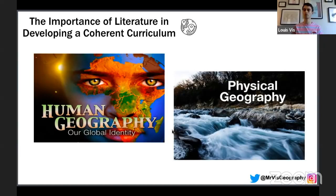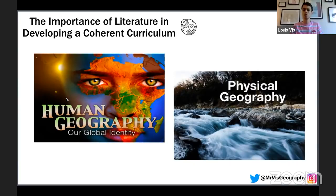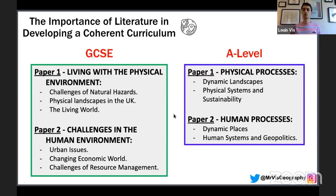The first thing we have to accept is that across the world geography is often seen as a binary subject, with human and physical concepts usually very distinct. In France, physical geography is taught in SVT — their biology equivalent — while human geography is taught in Histoire, their humanities equivalent. In the UK, at GCSE we have paper one physical and paper two human, and at university students often have to pick one or the other.